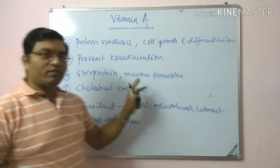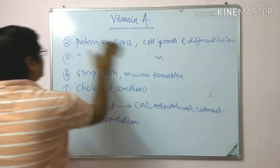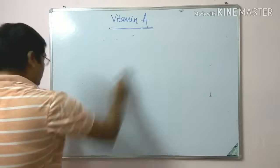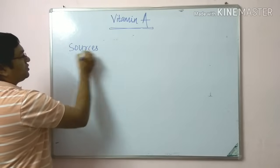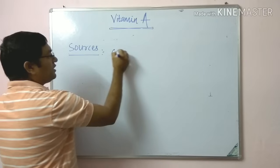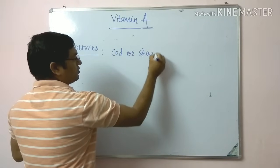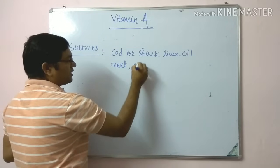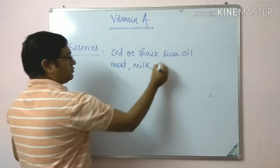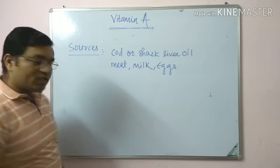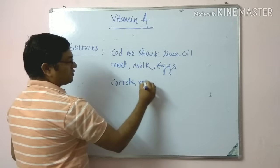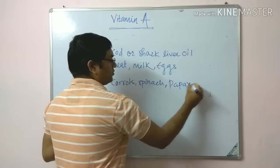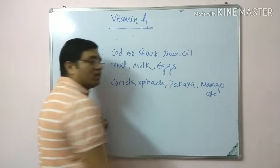Coming to the sources of vitamin A: rich sources include cod liver oil and shark liver oil. It is also present in meat, dairy products such as milk, and eggs. The pro-vitamin beta-carotene is present in carrots, spinach, and orange fruits such as papaya, mango, and pumpkin.